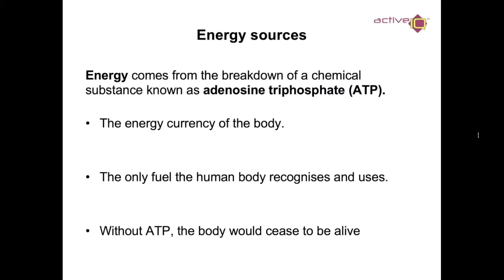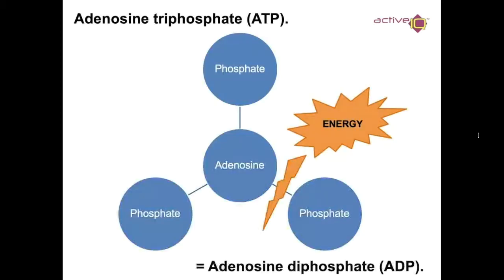So what energy sources are we looking at? Energy comes from the breakdown of a chemical substance known as adenosine triphosphate, which you may know as ATP, which is common in muscular contraction as discussed in one of the other episodes. ATP is the energy currency of the body — the only fuel the human body recognizes and uses — and without ATP, the body would cease to be alive.